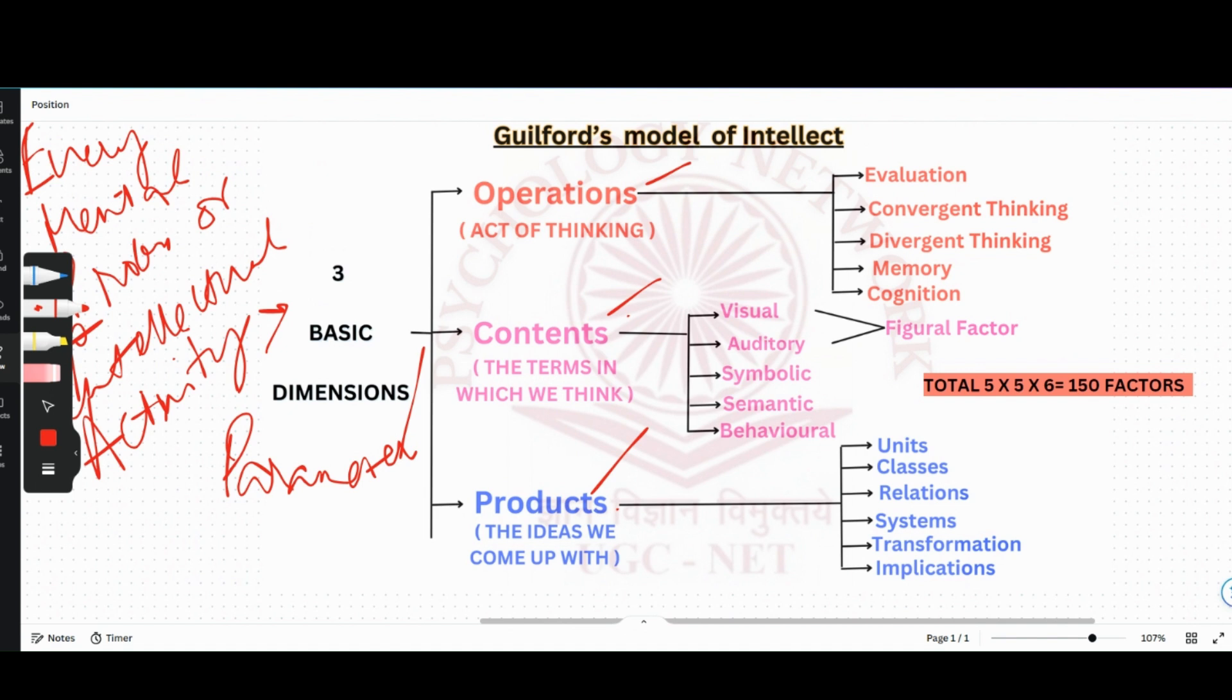So what is operation? Operation is the act of thinking. Under operations, there are five divisions of intellectual activity: evaluation, convergent thinking, divergent thinking, memory, and cognition.